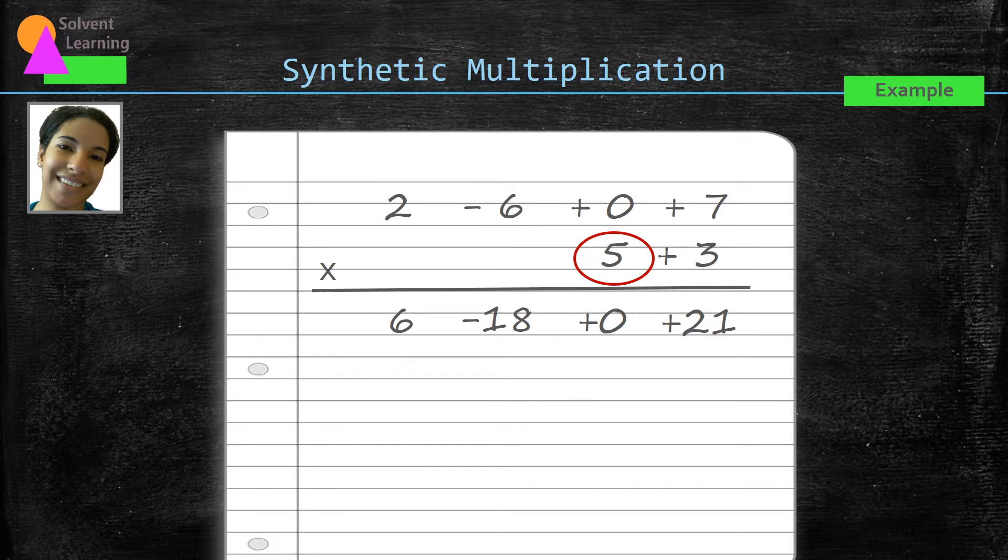Now we're going to do the same thing with the five. Multiply that five times each term from that top polynomial. So we have five times seven, which gives us 35. And notice that when we start a new row there, we move over one space to the left, just like when you're multiplying numbers together.